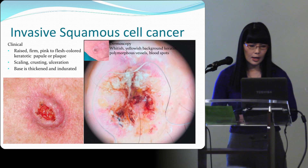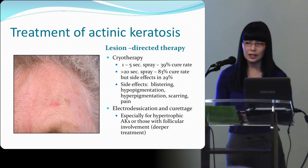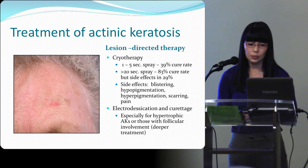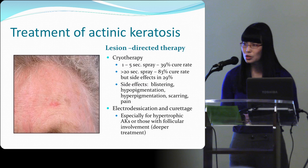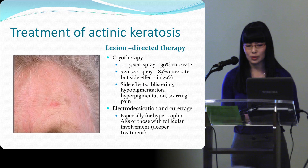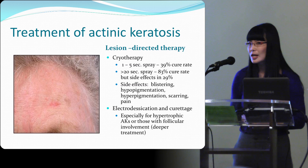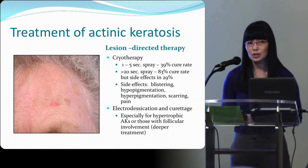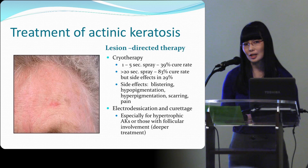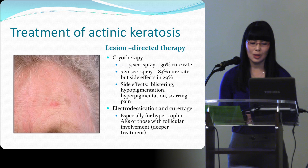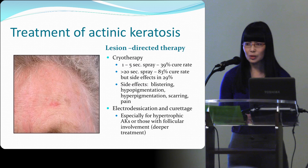For treatment of actinic keratosis, most of us use cryotherapy. A one to five second spray gives a 39% cure rate; more than 20 seconds gives an 83% cure rate, but with side effects in about 30% of cases — blistering, hypopigmentation, hyperpigmentation, scarring, and pain. It takes five seconds to kill a melanocyte with cryo, so for longer treatments you must warn patients they could be left with a permanent white spot. For younger or cosmetically concerned patients, consider several five-second sprays instead of one longer one.